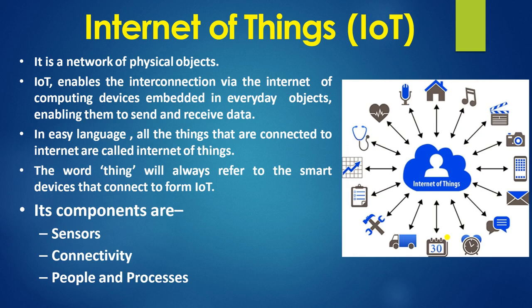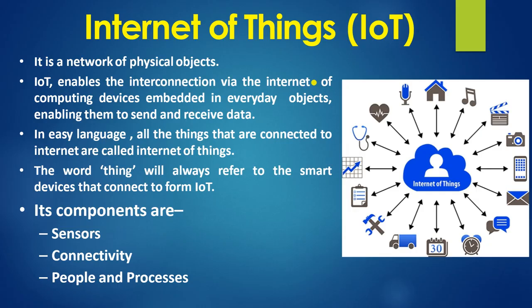The next topic is internet of things. It is a network of physical objects — anything connected with the internet is part of the internet of things. IoT enables the interconnection via the internet of computing devices embedded in everyday objects, enabling them to send and receive data. All things connected to the internet are called internet of things. The word 'thing' always refers to smart devices that connect to form the IoT. Its components are sensors, connectivity, people and processes.